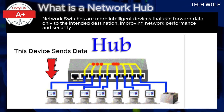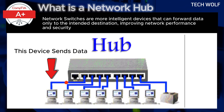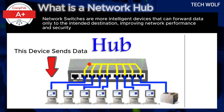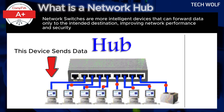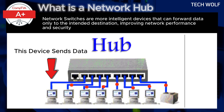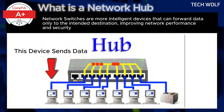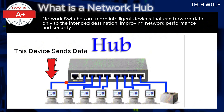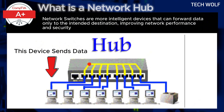There are limitations of hubs. Low performance: hubs can lead to network congestion, especially in large networks, as multiple devices may try to transmit data simultaneously. There are also security risks, since all devices on a hub network share the same network segment, making it easier for unauthorized users to intercept or modify data.